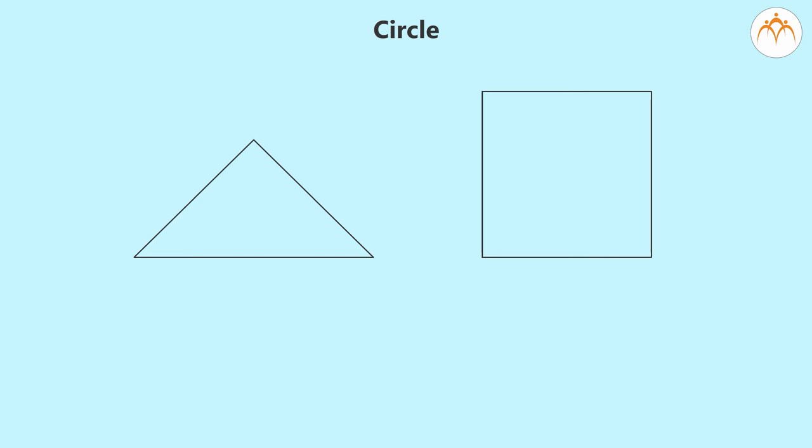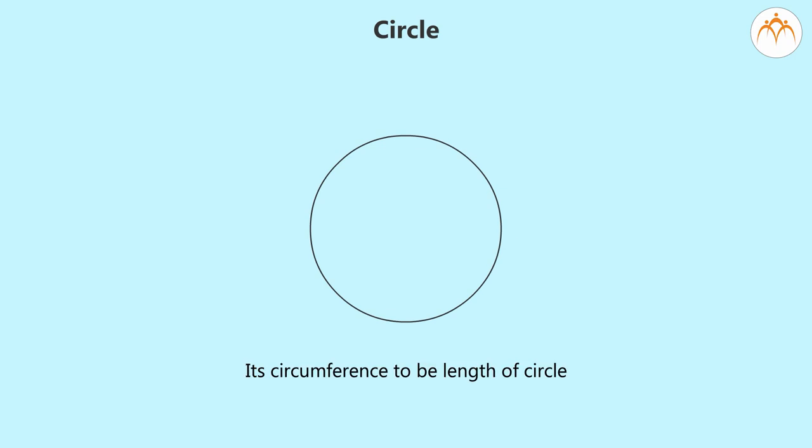As in case of a triangle or square, its perimeter is equal to sum of lengths of all of its sides. For circle, we define its circumference to be length of the circle.